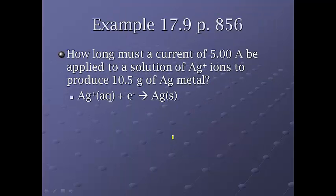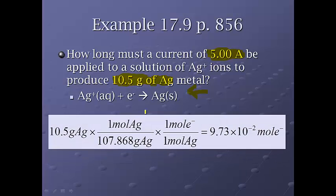Alright, so how long, let's jump right into this. How long must a current of 5.0 amps be applied to a solution of silver ions in order to produce 10.5 grams of silver metal? Alright, so this is the reaction that we're going for. We're going to take silver ions, add enough current to generate silver metal. And we want 10.5 grams of it.